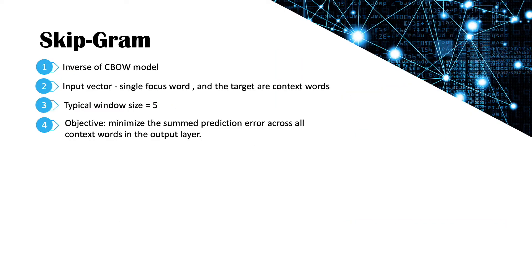The next algorithm behind how Word2Vec works is Skip-gram. Skip-gram is completely inverse of the Continuous Bag of Words model. In it, the input vector will be a single focus word and the target will be our context words — all the surrounding words we're trying to predict. We typically choose a window size of 5, but in these examples I've chosen window size of 2. The main objective of Skip-gram is to minimize the sum of predicted errors across all context words in the output layer.